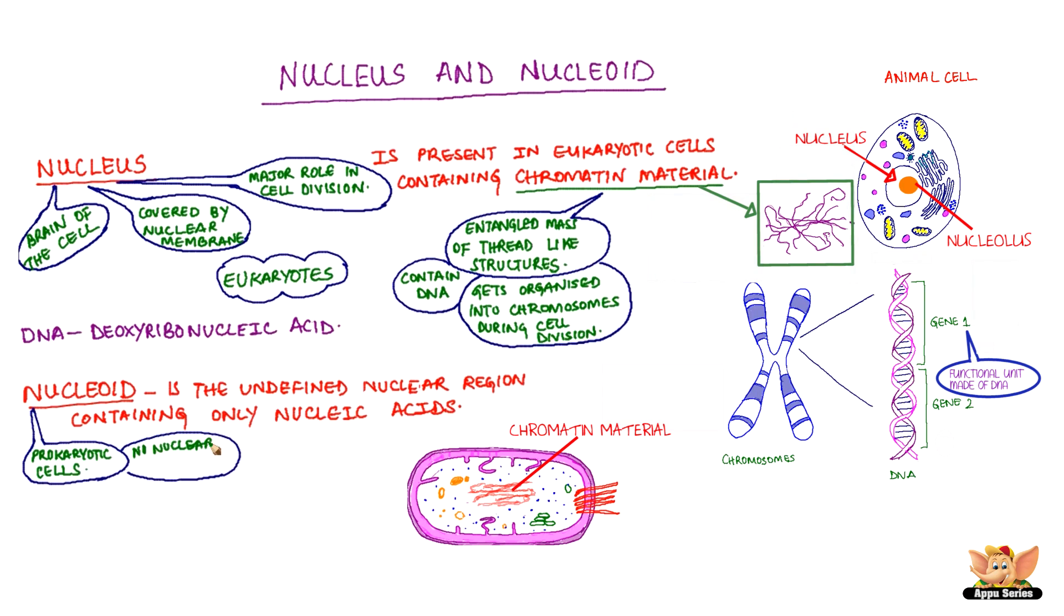The organisms whose cells lack nuclear membrane are called prokaryotes. Pro indicates primary and carion means nucleus. Bacteria fall under this category and those organisms with cells having a nuclear membrane are called eukaryotes.